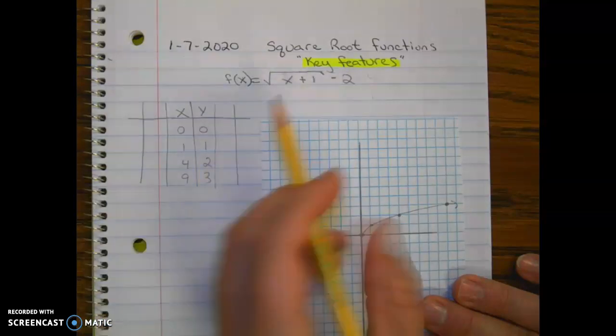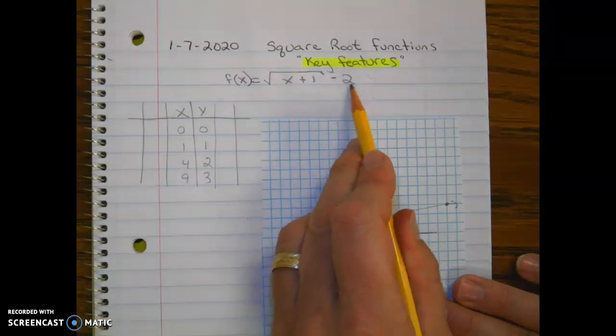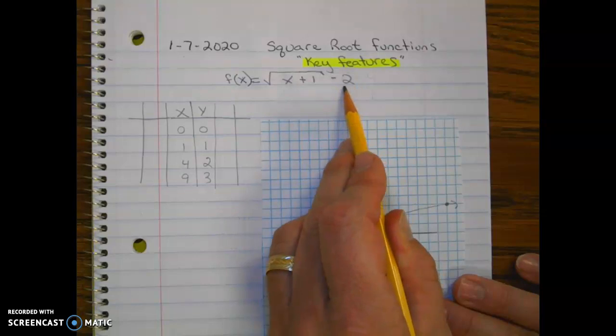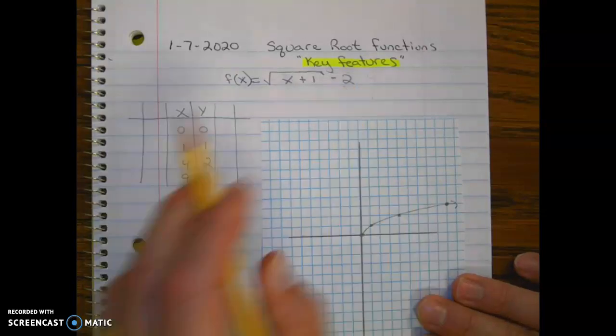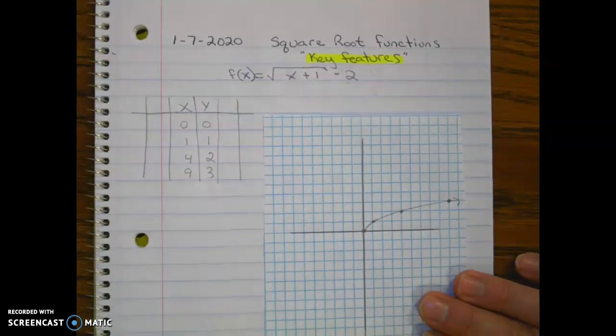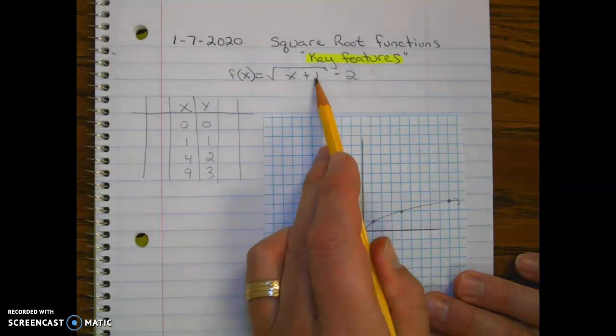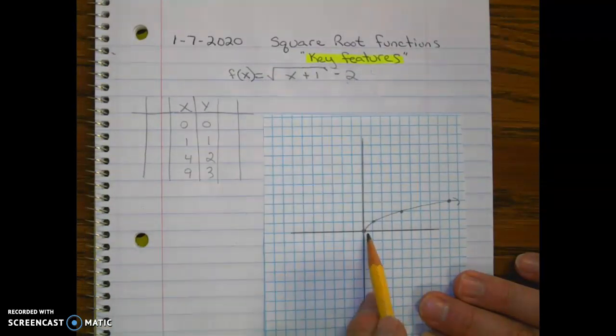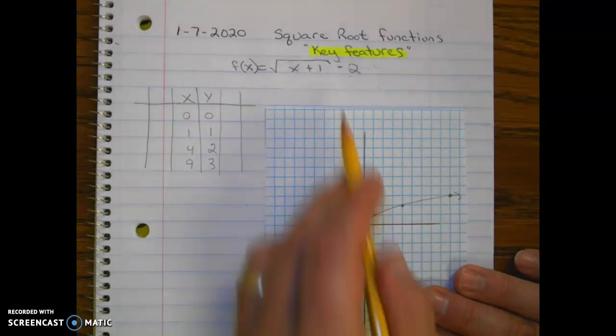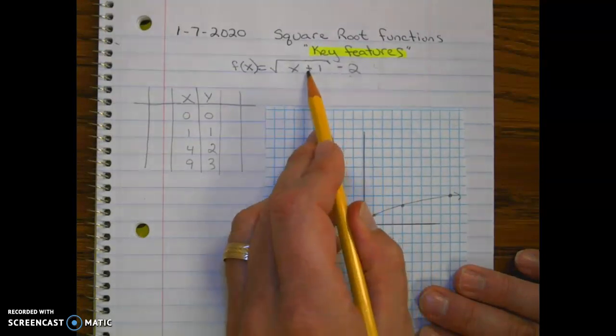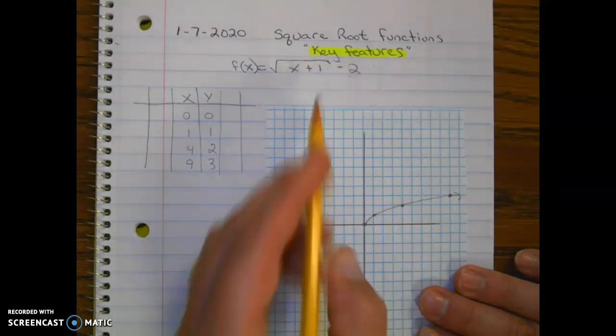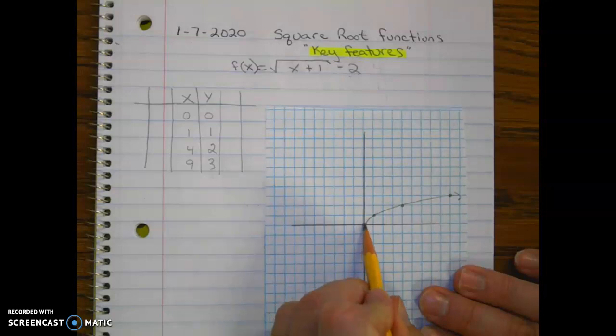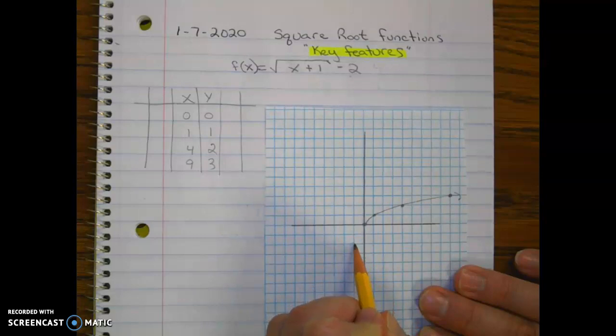And then we have translated two units down. So just knowing this, we could go straight to our graph. It says one unit to the left and two units down. So from our starting point, one unit to the left and two units down. So that would be our new starting point.